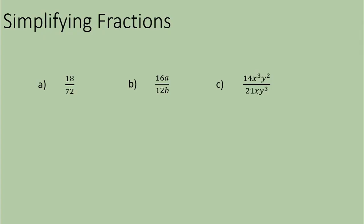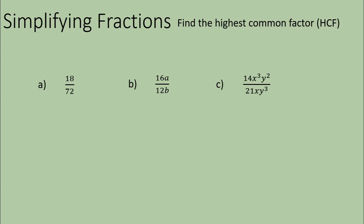These first three examples are fractions which could easily be simplified given that you have the basic background knowledge of how to simplify a fraction. You need to find the highest common factor of both the numerator and denominator and divide both by that value. The first fraction, 18 over 72, isn't even an algebraic fraction — there are no variables, only number values. So we find the highest common factor of 18 and 72, which is 18. 18 divided by 18 is 1, and 72 divided by 18 is 4, giving us 1 quarter as a simplified fraction.